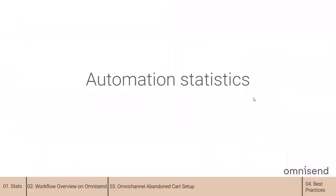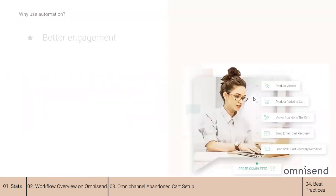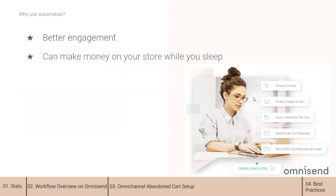So why use automation in the first place? Automation workflows prove to have a much better engagement rate and order rate compared to regular promotion campaigns. Workflows are automated and can make money while you sleep. They are trigger-based and you can set them for various different events happening on your online store. You can trigger automation for specific groups of contacts and time them right.